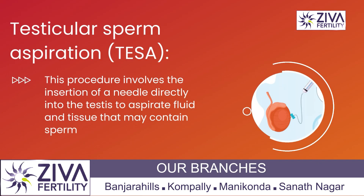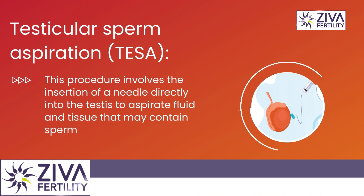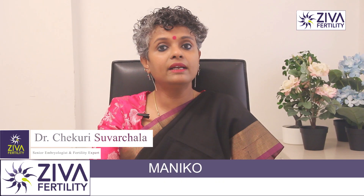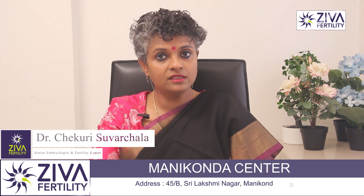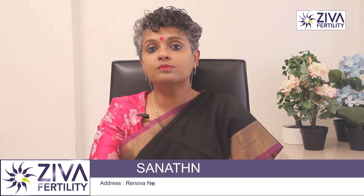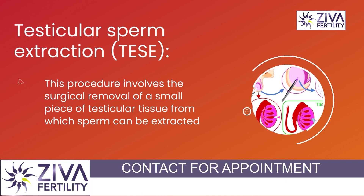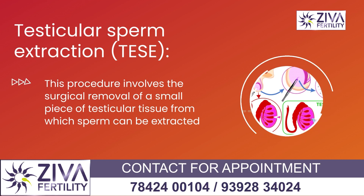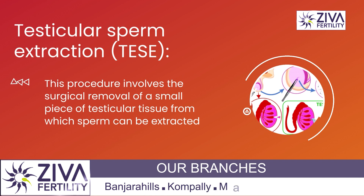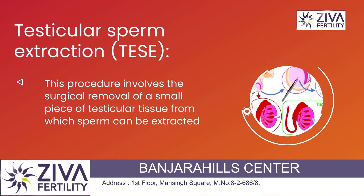Testicular Sperm Aspiration, also called TSA, is a procedure which involves insertion of a needle directly into the testis to aspirate fluid and tissue that may contain sperm. Then there is TESE — Testicular Sperm Extraction — which involves the surgical removal of a small piece of testicular tissue from which sperms can be extracted.